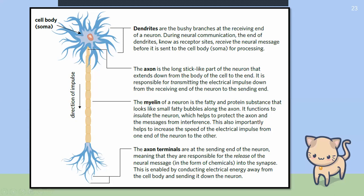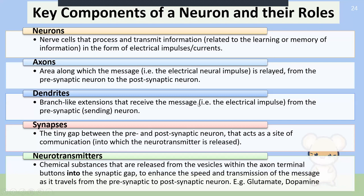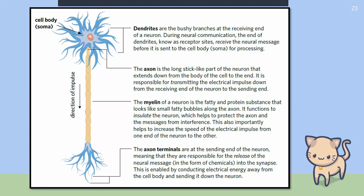When you look at the neuron, you've got all these different components, and this gives you a little insight into the function of each one. The impulse or message travels down the axon, which is the stick-like structure we can see. The myelin is a white, fatty, waxy covering that protects the message from interference. We've got a further definition of each of those components and their functions on this slide — so remember the definitions listed in the study design, and understand the structure including myelin and axon terminals.